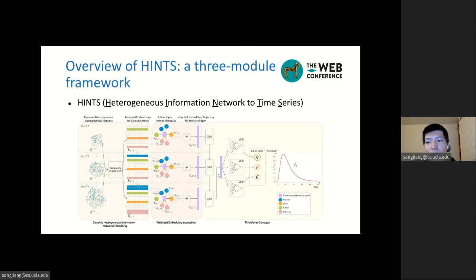We propose a novel framework called HINTS. HINTS converts the temporal and relational information encoded in a DHIN before publication year into the citation time series after publication. HINTS has three modules. The first module is to encode all nodes in each year's heterogeneous bibliographic network into some low-dimensional embedding. And the second module is to use the learned embedding to impute a representation for the new paper in the years prior to its publication. And in the last module, this imputation is converted to the parameters of a time series generator. The generator encodes prior assumptions about citation processes. Finally, this generator will predict the long-term citation trajectory for a new paper.